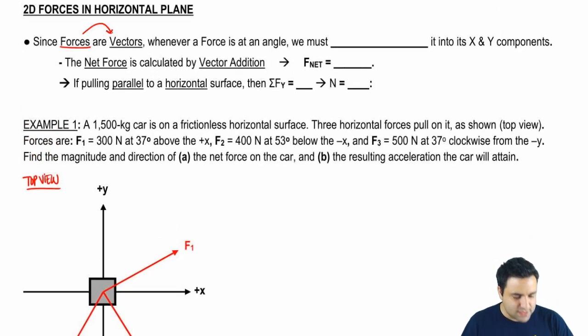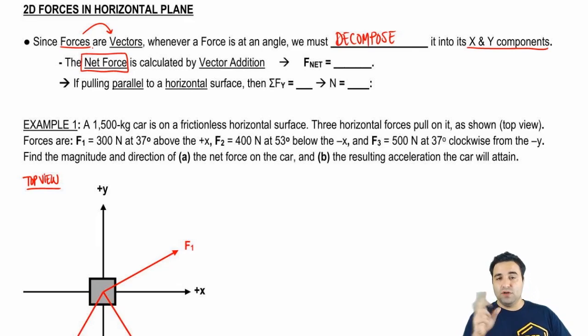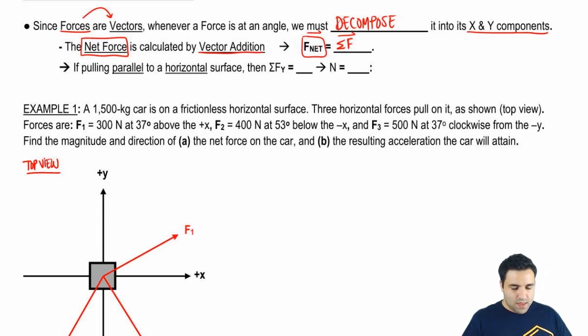Before we jump into this, let me give you a few reminders about forces. So forces are vectors, and since they're vectors, whenever we have a force at an angle, whether it be like this, or at an angle sort of like this, in a horizontal force, we have to first decompose that force into its x and y components. That's the first thing. Second thing I want to remind you of is that, again, since forces are vectors, the net force, that means the one force that could replace all the other forces you have, is calculated by a process called vector addition, which we've covered.